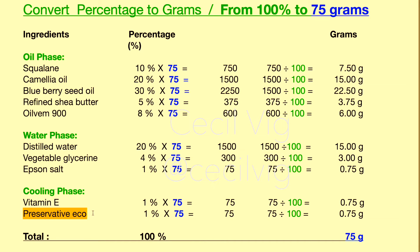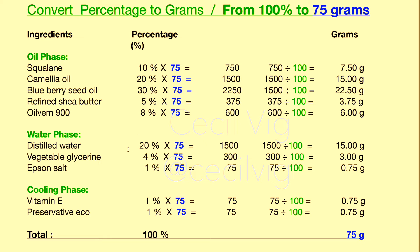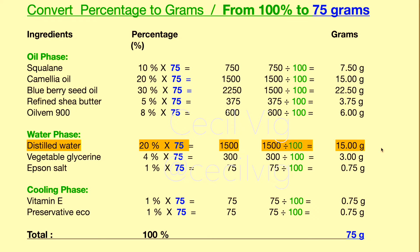Make sure you do the same calculation with each ingredient. I will show you another example with distilled water. As you can see, distilled water is 20 percent of the formula. We multiply 20 by 75 and the answer is 1500. Then we divide 1500 by 100 and the answer is 15. This means that when preparing a 75 gram recipe from this 100 percent formula, the amount of distilled water to be used is 15 grams.